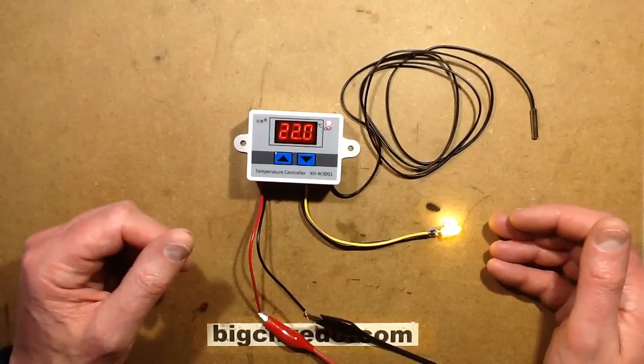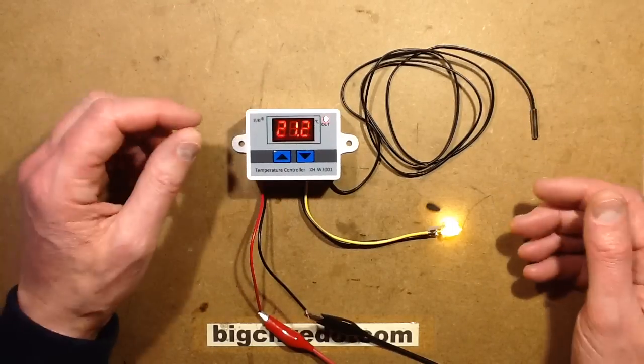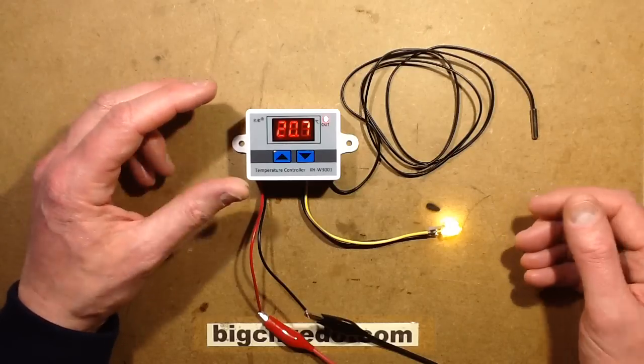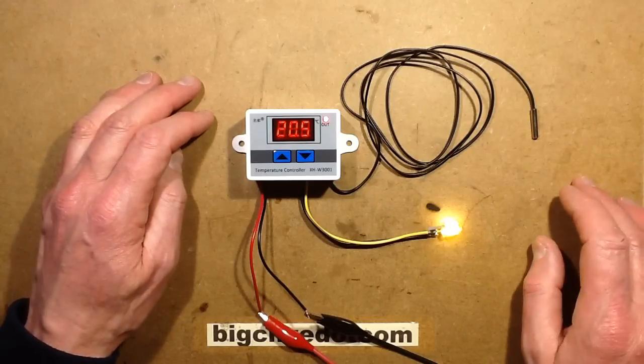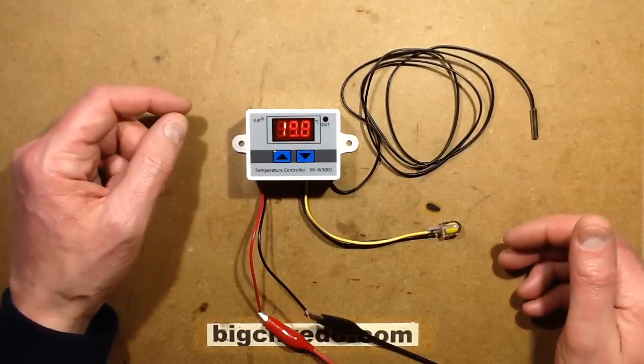As the temperature comes back down, obviously it's going to turn off when it reaches the target of 20 again. And the fact you can set the on and off temperature independently means that you can set a hysteresis. In this case I set a hysteresis of 2 degrees.